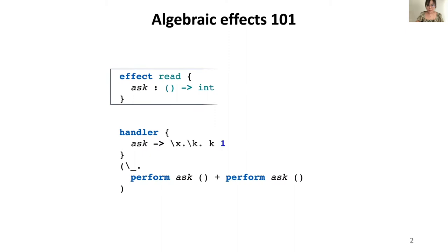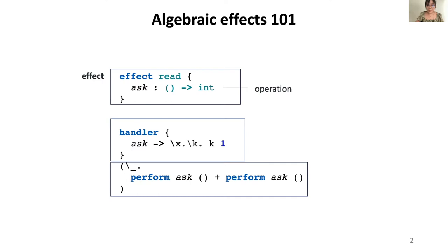Here is an example for the reader effect. There are three parts. In the first part, we define an effect read, which has a single operation ask that given a unit returns an int. The second part defines the handler for the read. The implementation says that if the program calls an ask, it will resume the resumption k with the result value 1. Handler takes a computation, which is represented as a unit-taking function. In this computation, we simply call ask twice. Since each ask returns 1, we will get 2 as our final result.